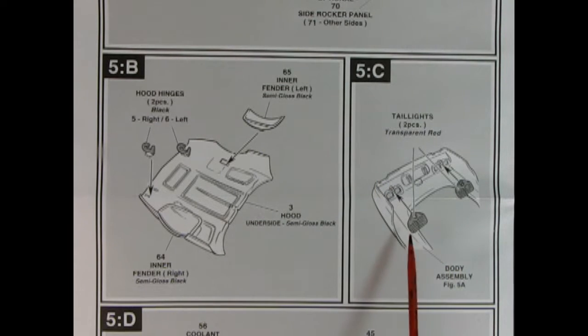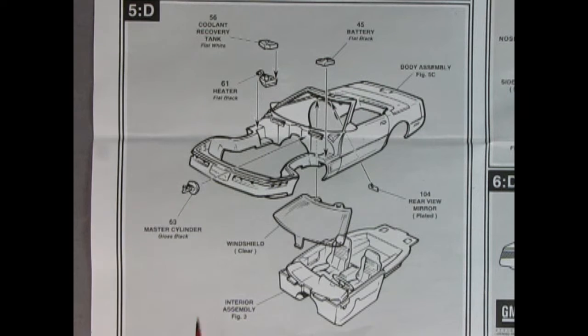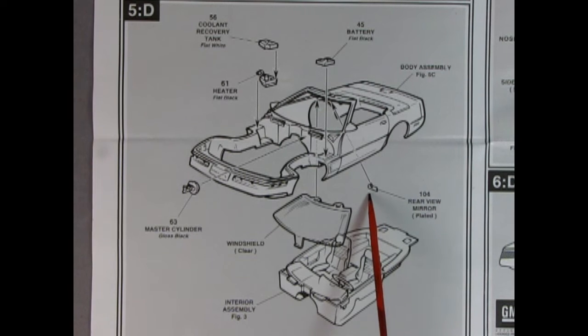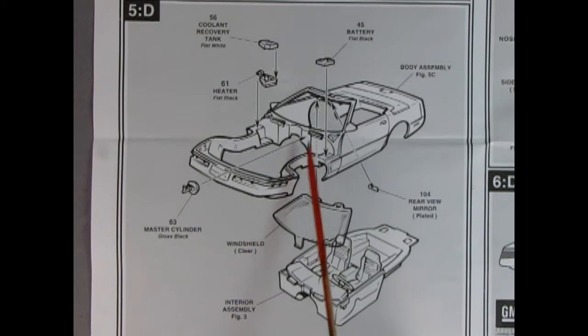Now, panel 5C shows our taillights being put in. There's a hole here and a little pin there. Little pin, little hole, little glue, and it all go together. Panel 5D is showing our coolant recovery tank being glued onto our heater. And we have our battery dropping in place. Our master cylinder goes right there. And then we've got a rear view mirror, which goes right up here. And then we put our windshield in. Or maybe you might want to put the windshield in first. And then you get your interior assembly and you pop it right up inside. You see these little tabs? They go into those little holes. And there's a little tab in the back. And there's a little like claw in here. The claw knows everything.